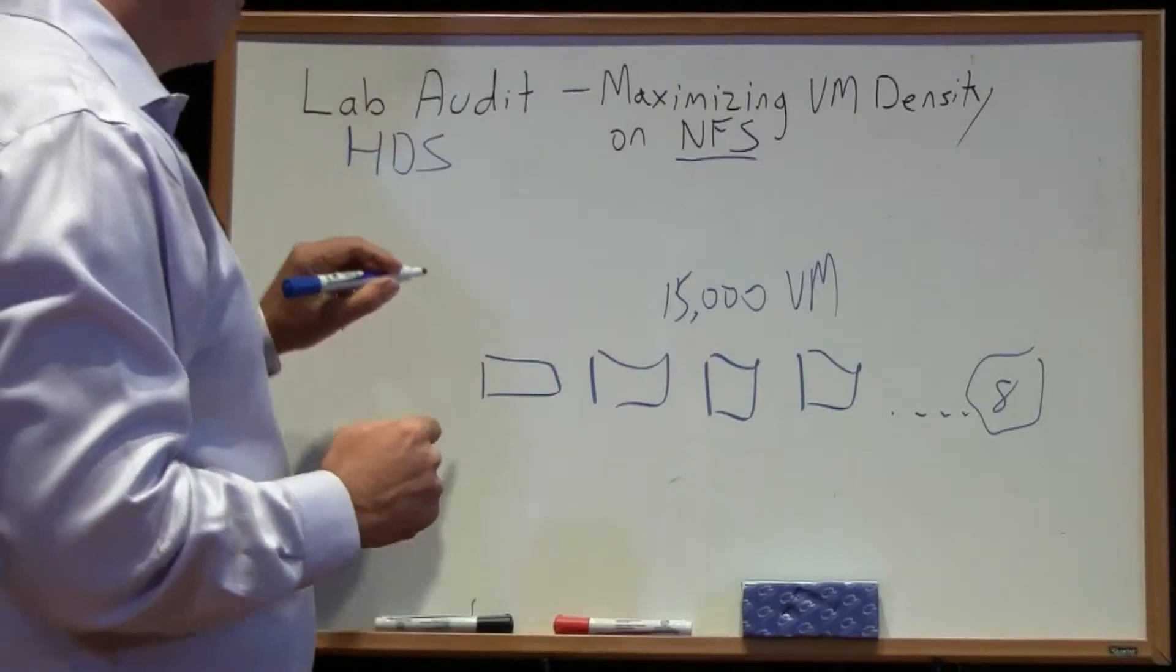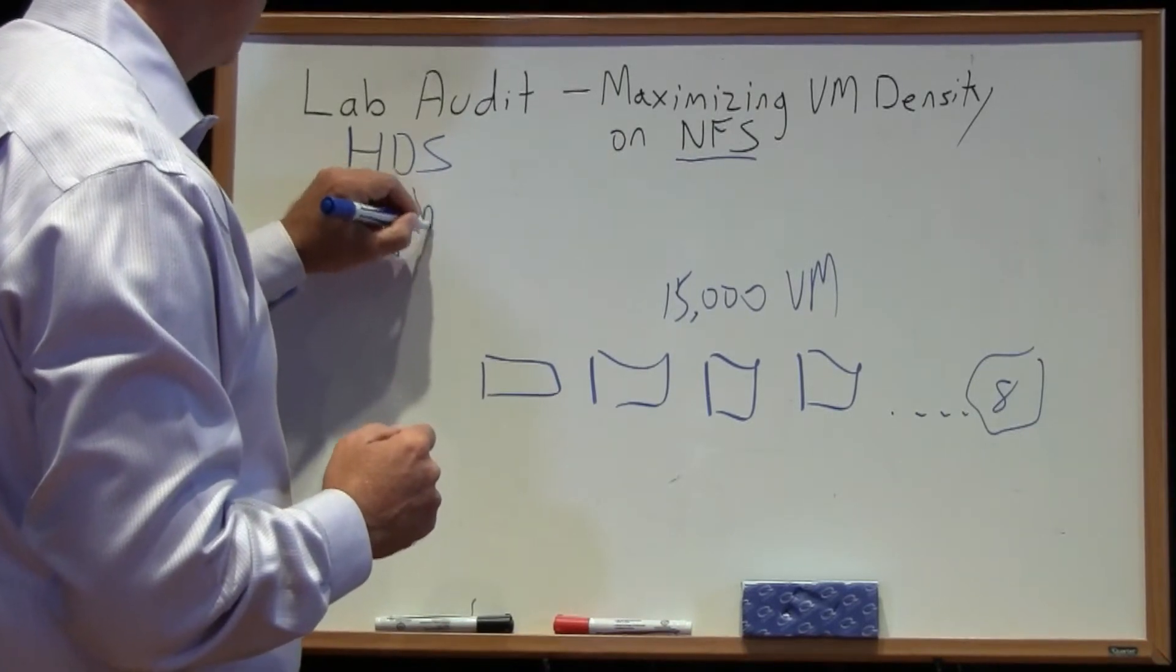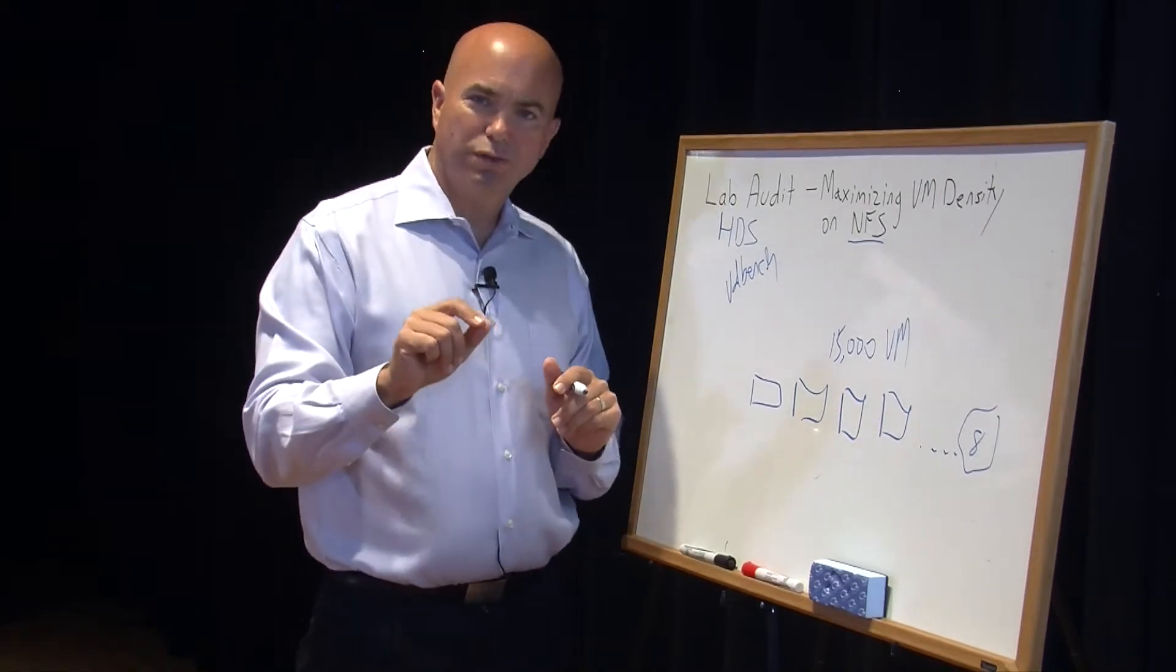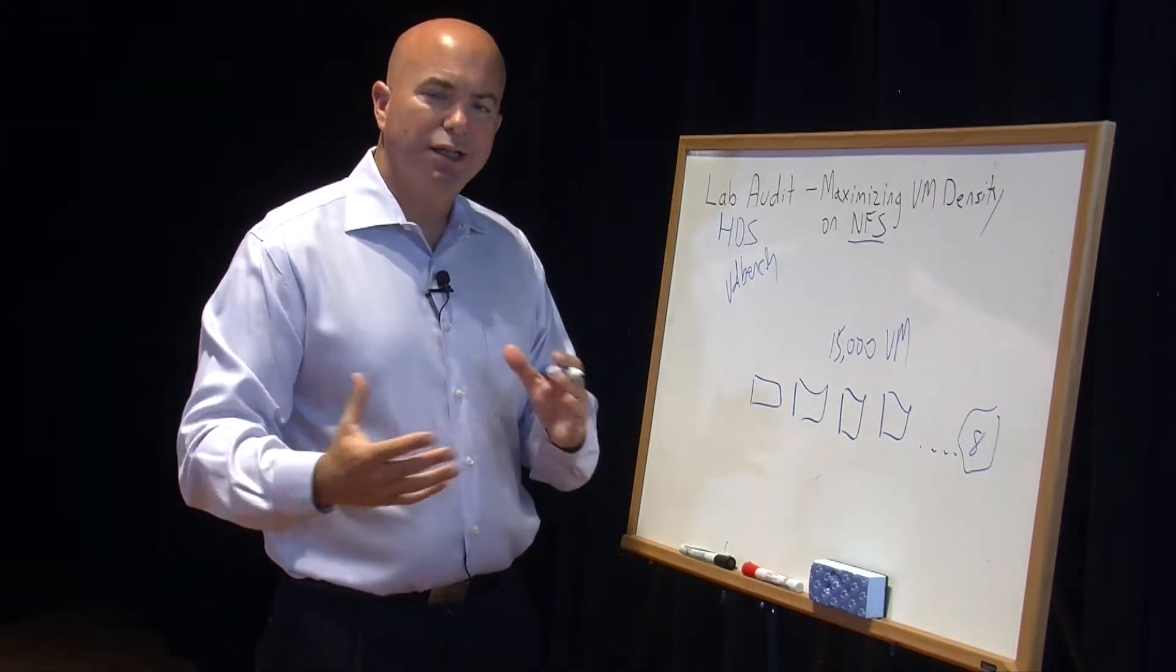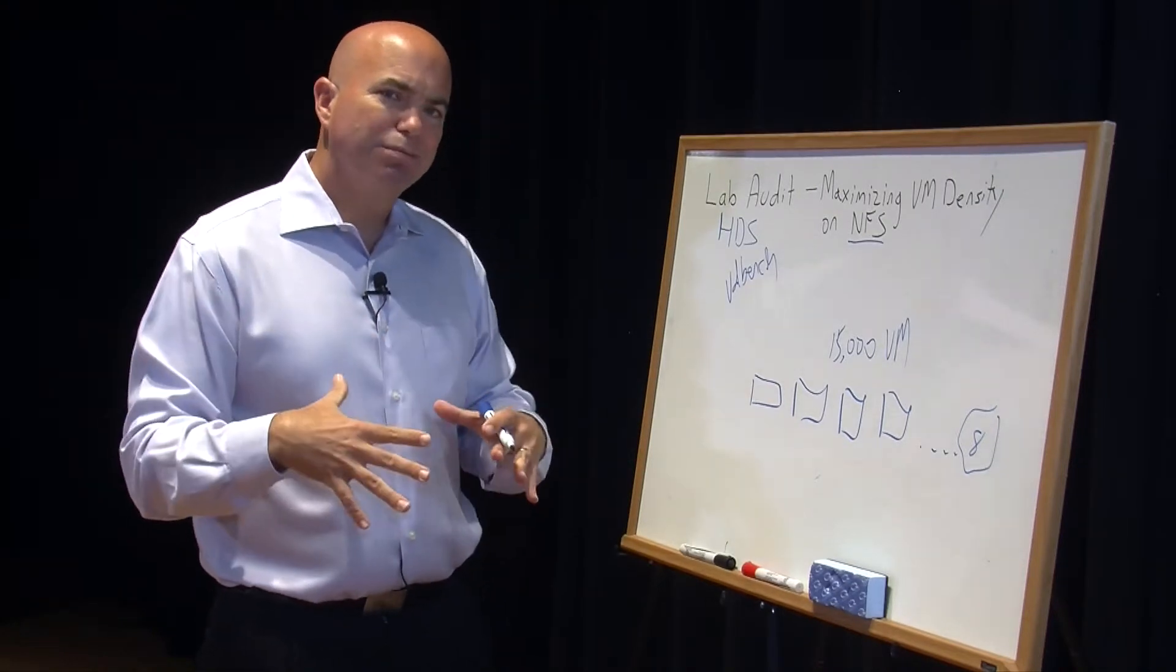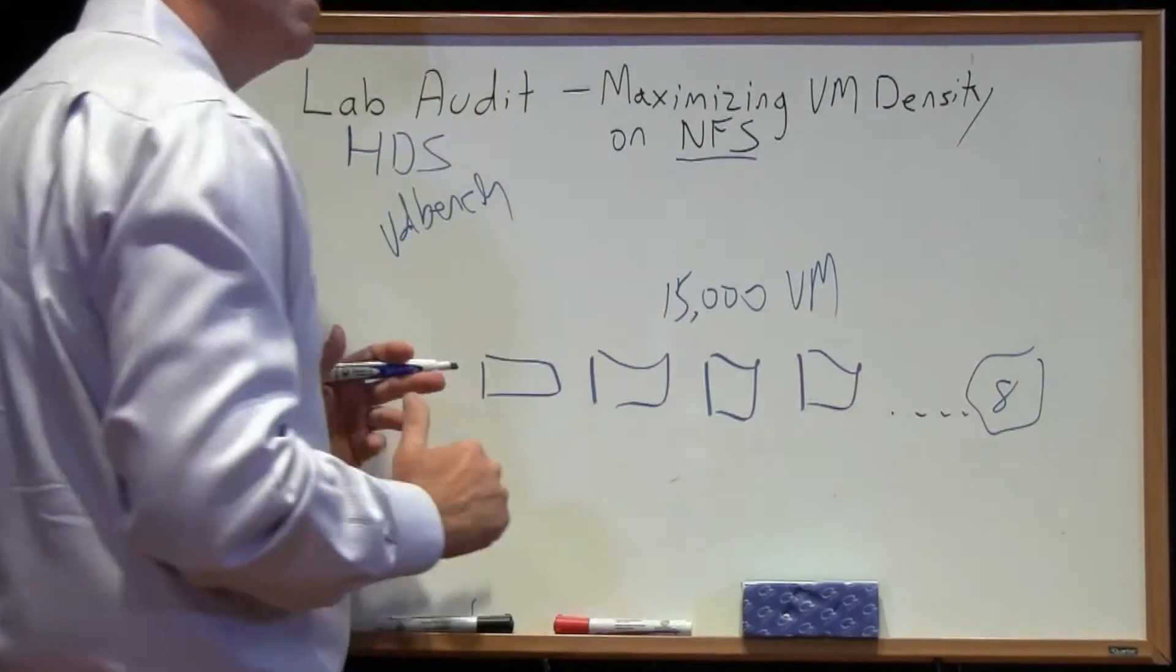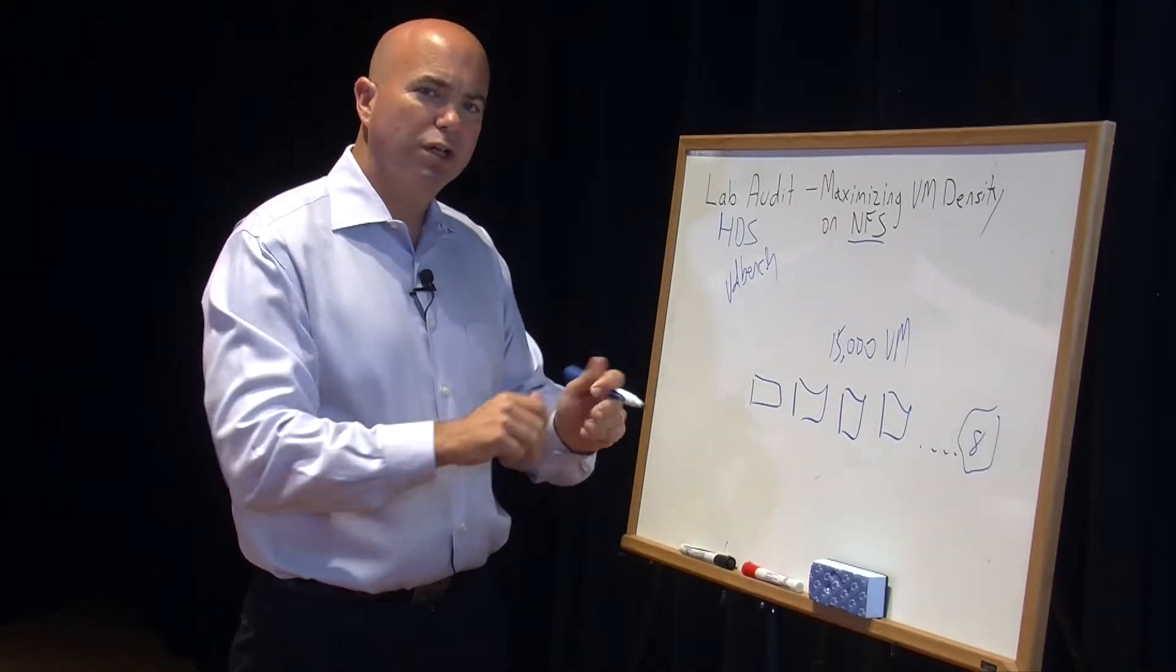To generate the load, which is another important factor, we used a product called VDBench, which gave us really fine-grained control over creating a mixed workload, random read, random write type of activity. And that's important because we wanted to test that as best we could simulated the real world. And so that allowed us to get some granularity where we could control that.